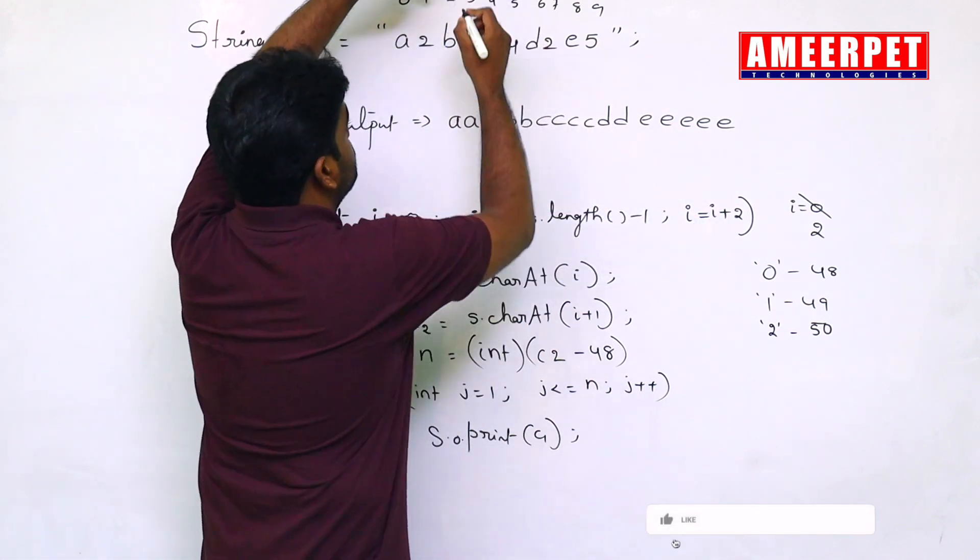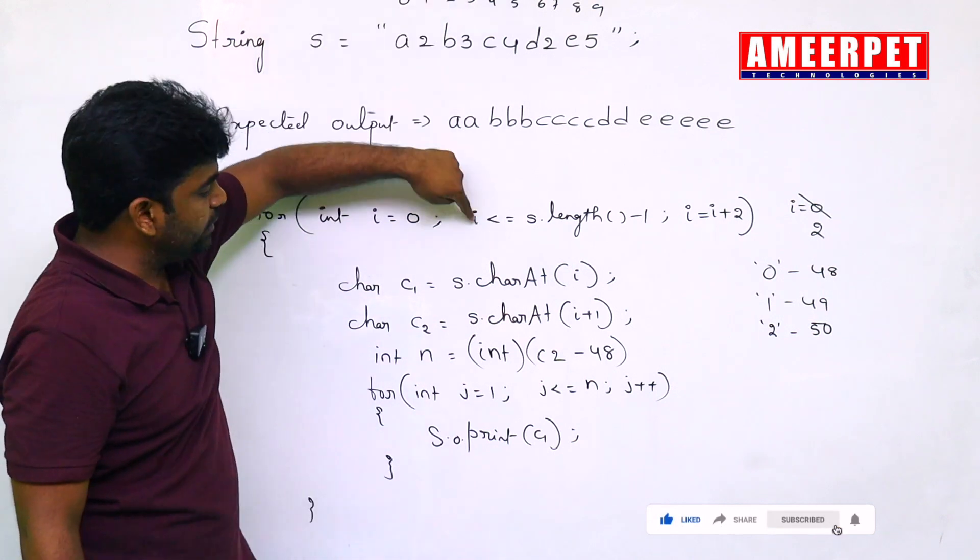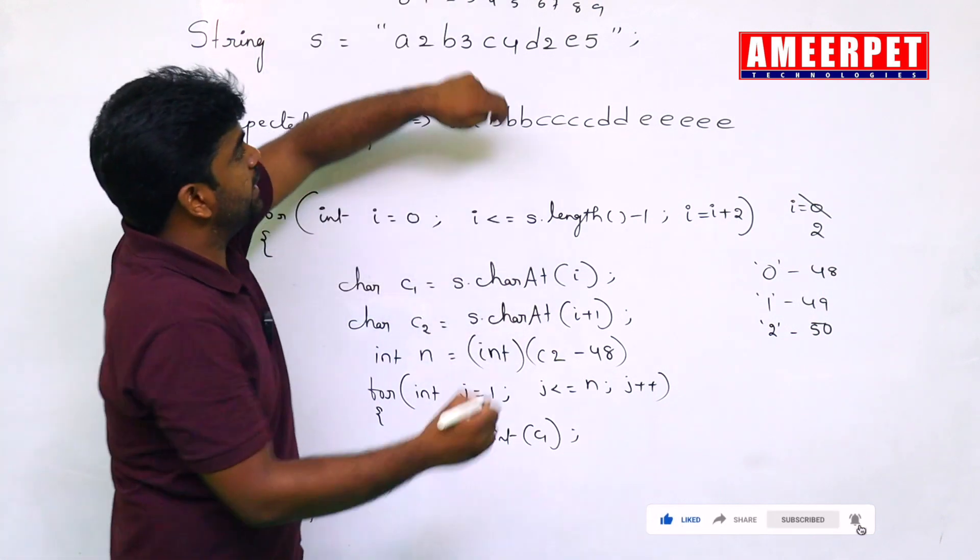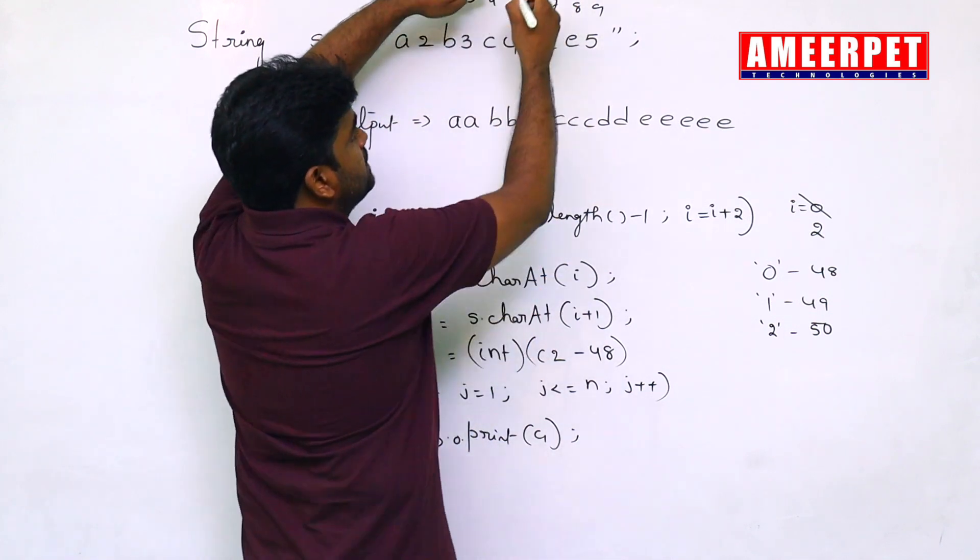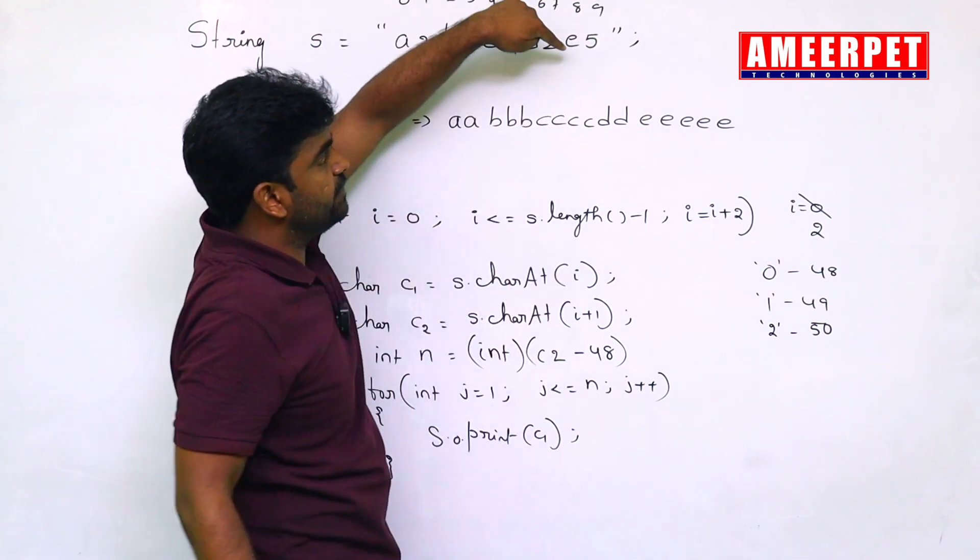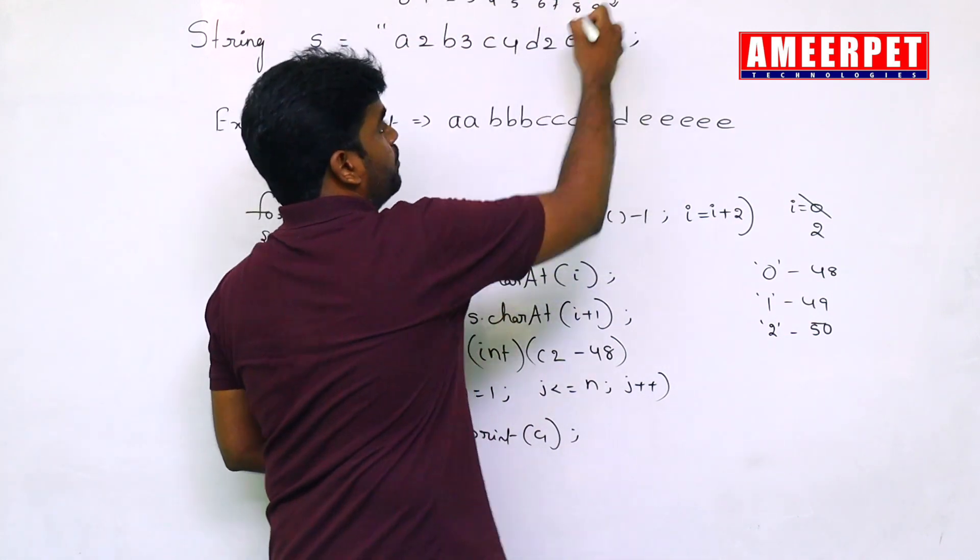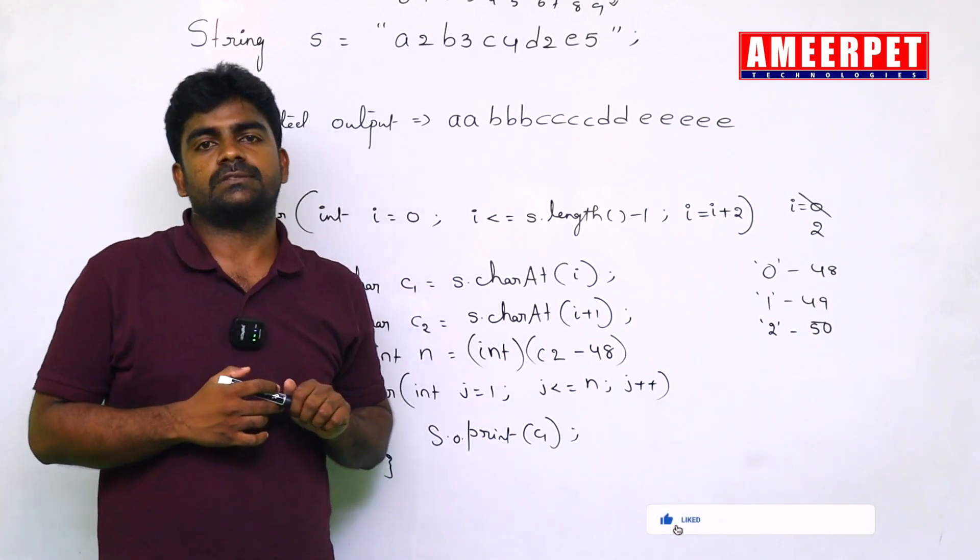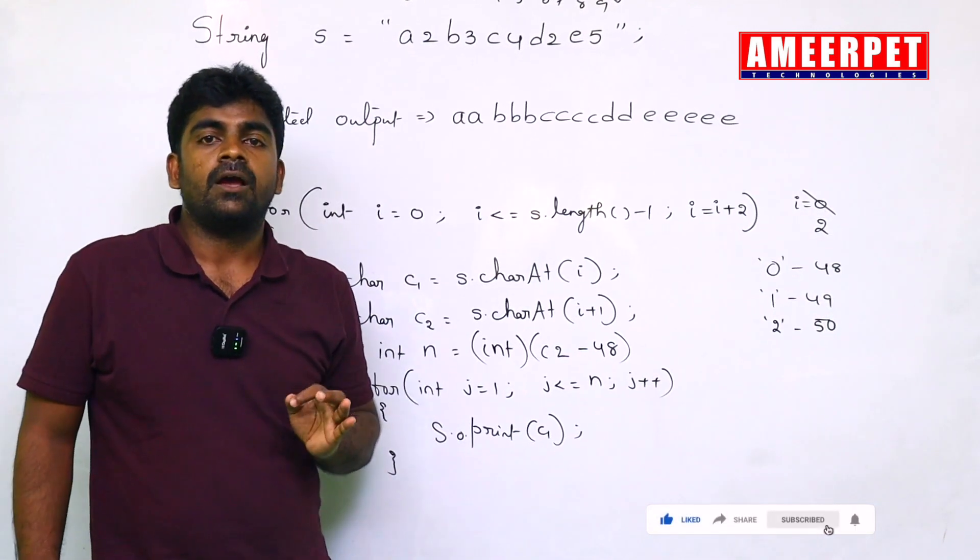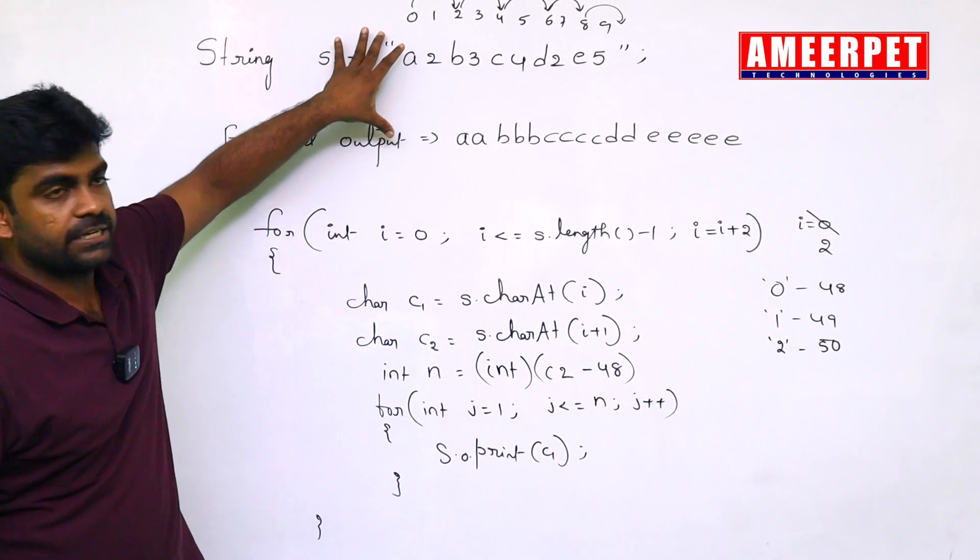Next, i is equal to i plus 2 means from here it will jump to here, and it will repeat 4 times. Next, it will jump to here. It will repeat 2 times. Next, it will jump to here. It will repeat 5 times. Next, whenever it will jump to the 10, 10 less than or equal to 9 condition forms. This is the simple way of writing the program for this question.